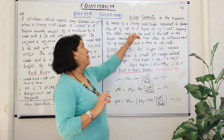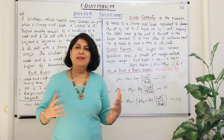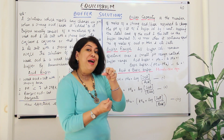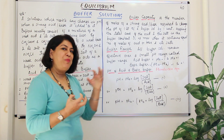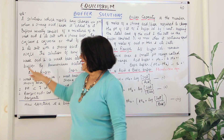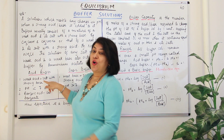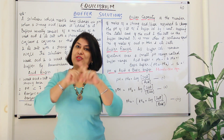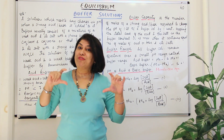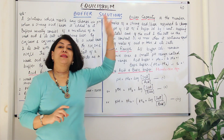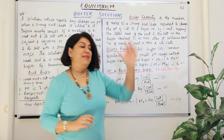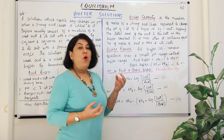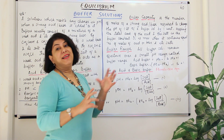When is this buffer capacity maximum — when is the cushioning effect the greatest? The cushioning effect of the buffer solution is maximum when the acid and the salt, or the base and the salt, are equimolar — present in equal number of moles in the buffer solution. That is when the buffer capacity is found to be maximum.